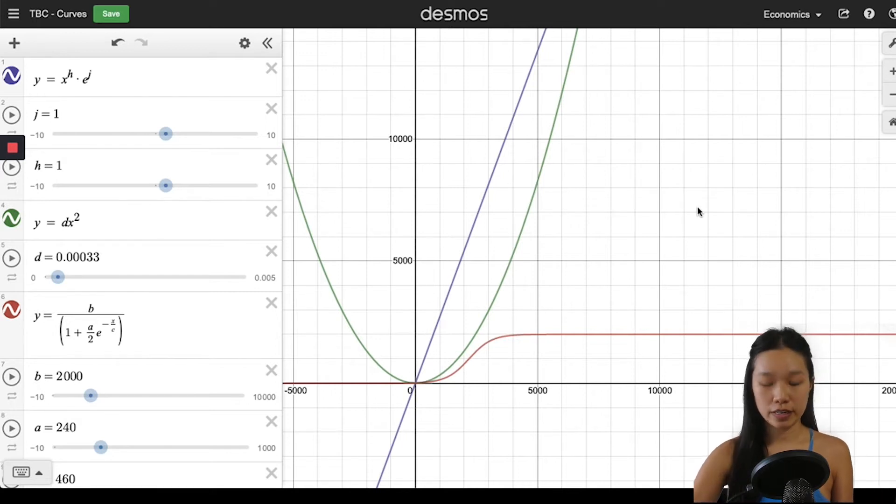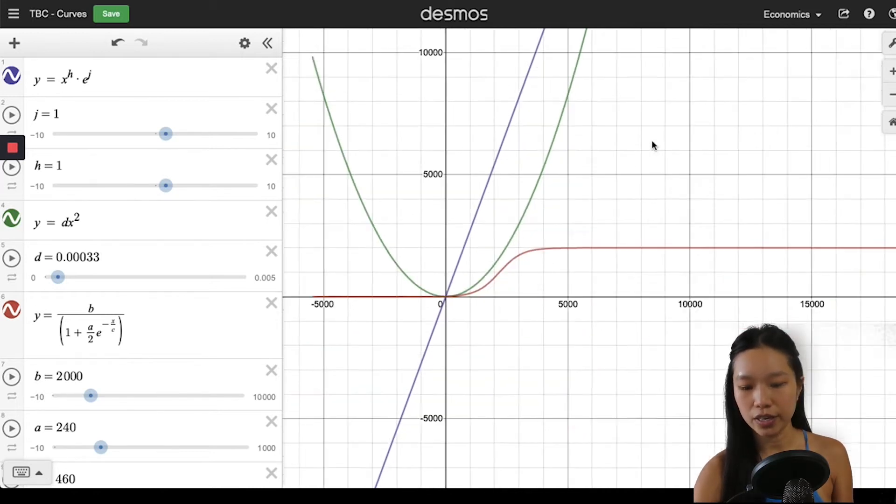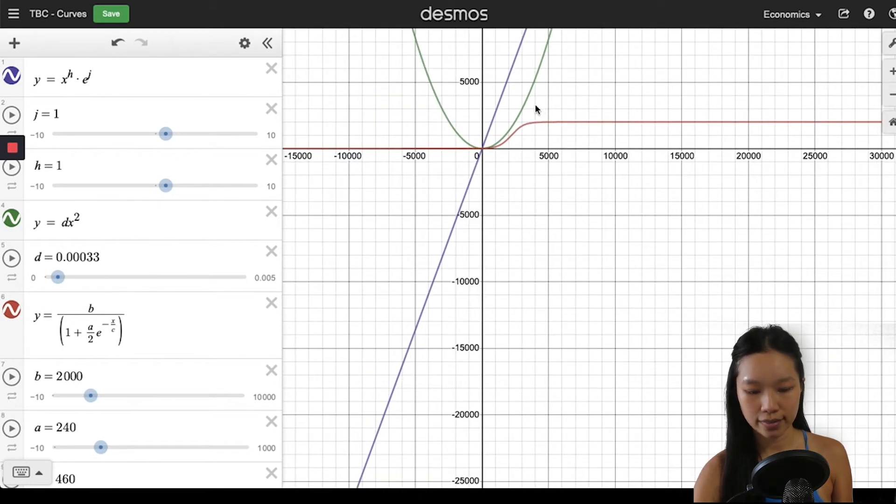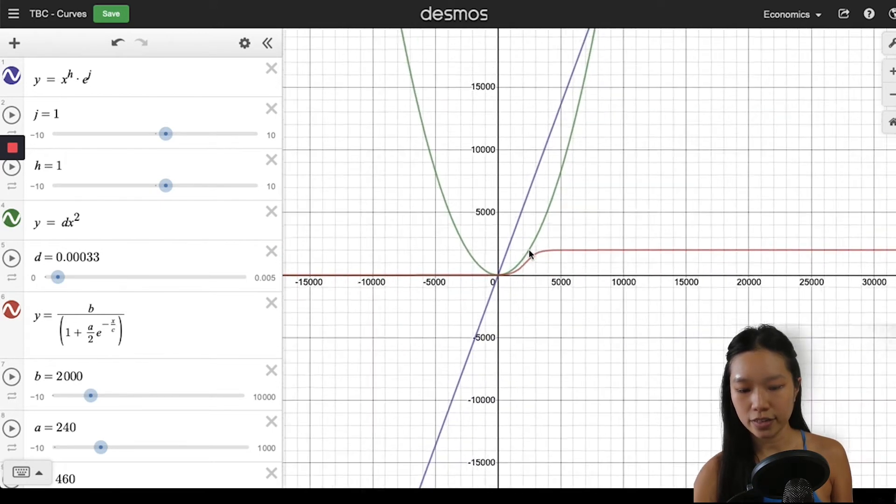The green line is the power function and the orange line that you see over here is the sigmoid function. Okay, so let's get started with the simpler one first, which is the linear function.